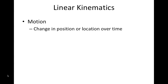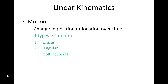Motion is a change in position or location over time, and we have three different types: linear, angular, or both — also called general motion — which is what most motion you encounter throughout life generally is.